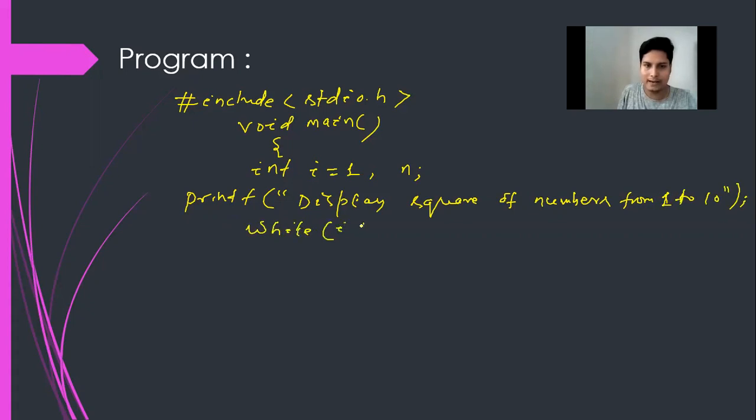So now while i less than equal to 10, n is equal to i asterisk i semicolon, printf within double quotation percent d, double quotation and comma n bracket and semicolon, then i plus plus. The value of i will be incremented. Then while loop closed, main function closed. So now the program is complete.